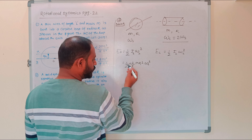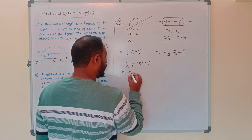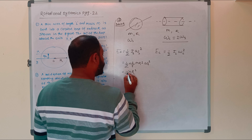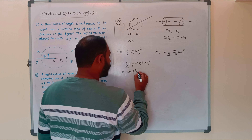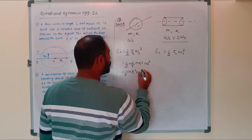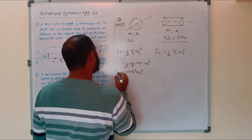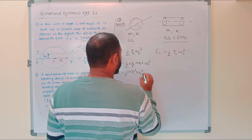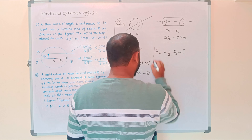Rearranging, the 2 cancels to give (1/5) M R² ω_s². This is equation one — the rotational kinetic energy for the solid sphere.